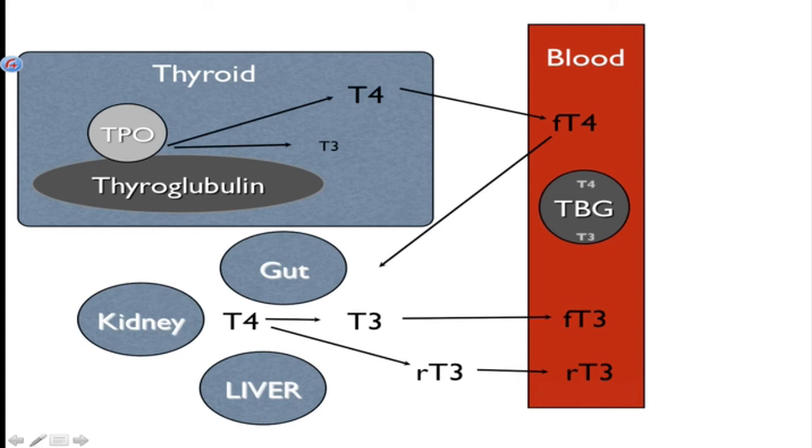Now here's what's important to understand. Only the free T3 and free T4 are active. As long as T4 and T3 are bound to the TBG protein, they are not active. What happens from here is free T3 goes and positively stimulates cells for metabolism, fat burning and things like that, and reverse T3 blocks that conversion.